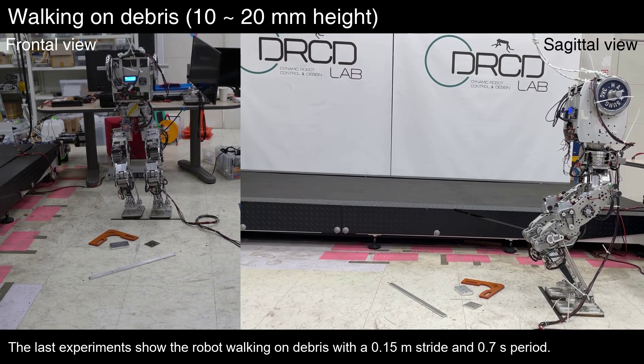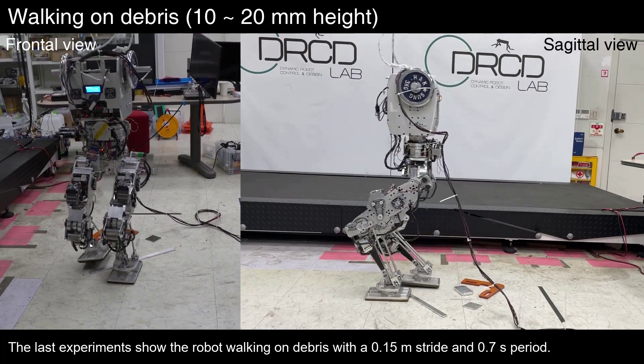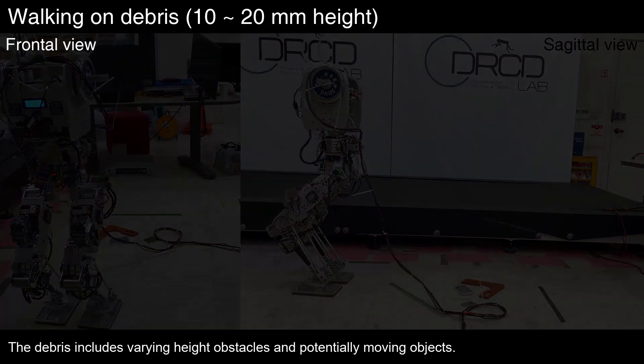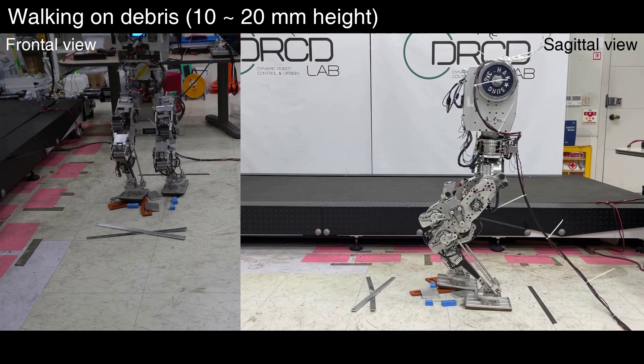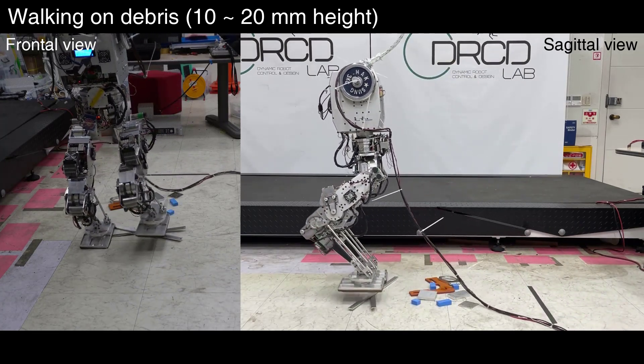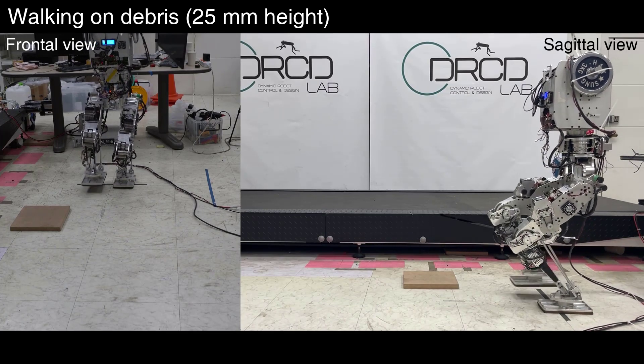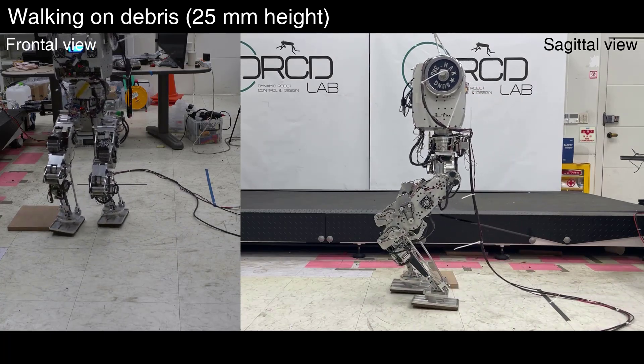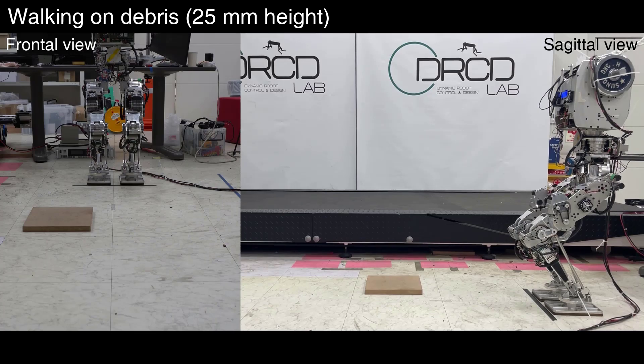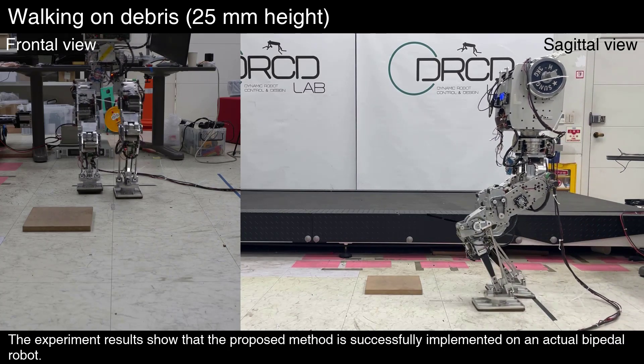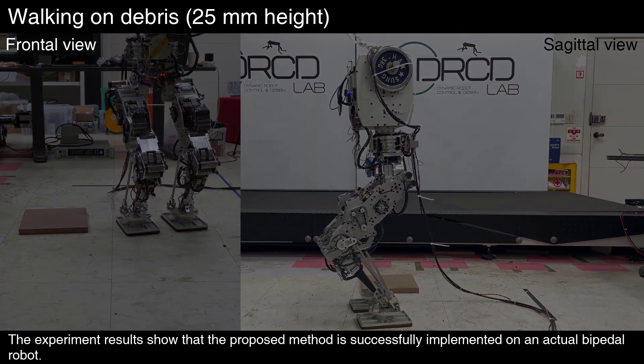The last experiments show the robot walking on debris with a 0.15 meter stride and 0.7 second period. The debris includes varying height obstacles and potentially moving objects. The experiment results show that the proposed method is successfully implemented on an actual bipedal robot.